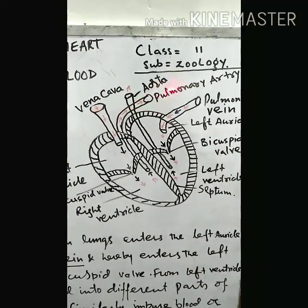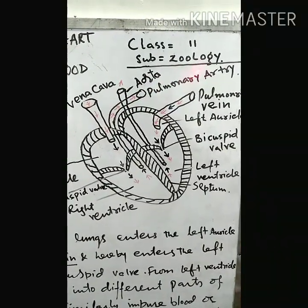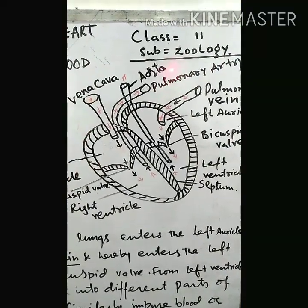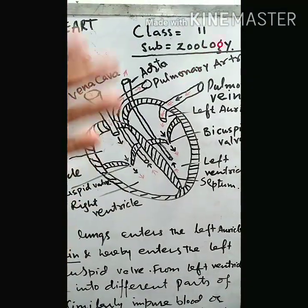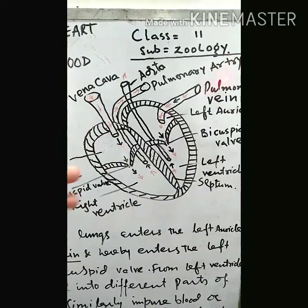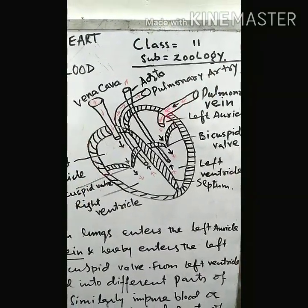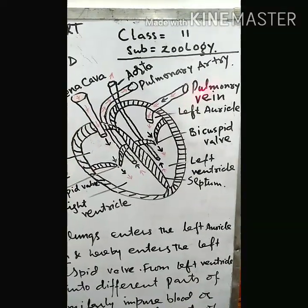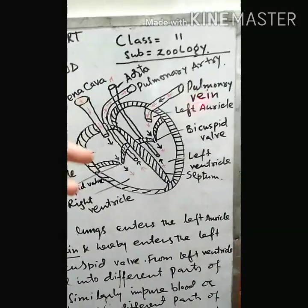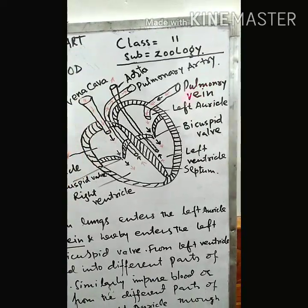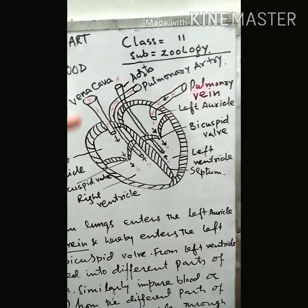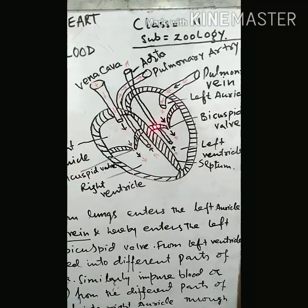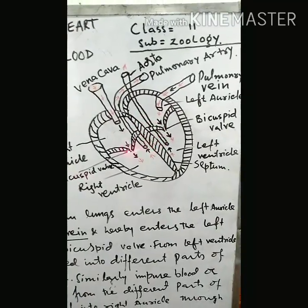So the pulmonary artery carries the deoxygenated blood. But it is called an artery because it carries the deoxygenated blood towards the lungs. From the lungs, the oxygenated blood comes into the left auricle by the pulmonary vein. Though it is a vein, it carries oxygenated blood. So when it is called pulmonary vein, it carries the oxygenated blood from the lungs. Hereby this repeats the circulation of blood.